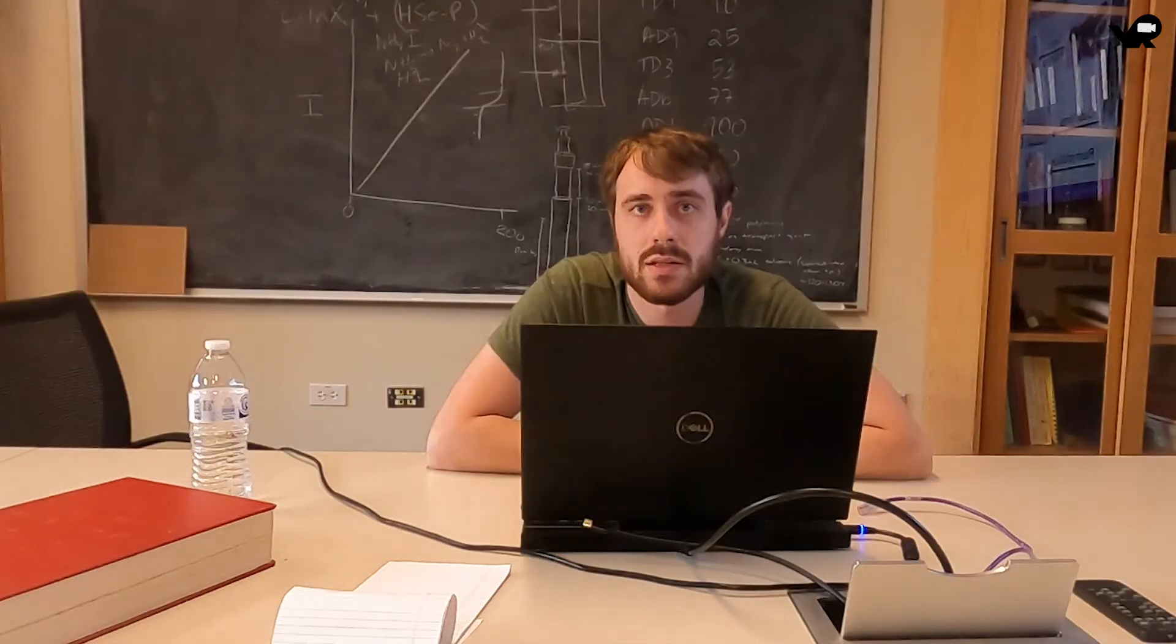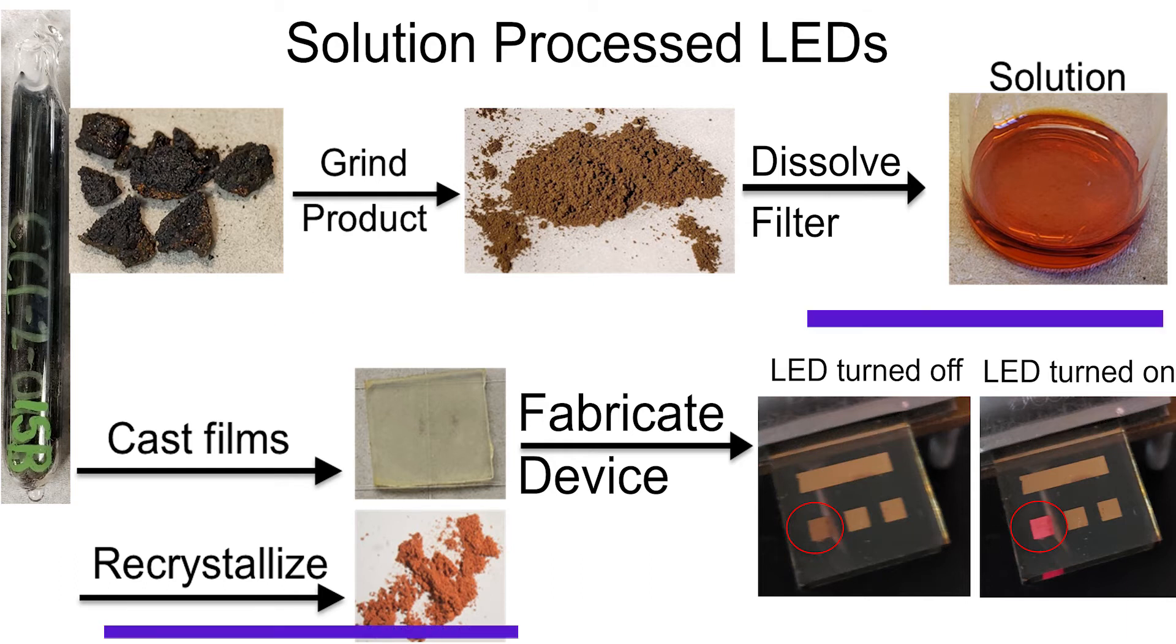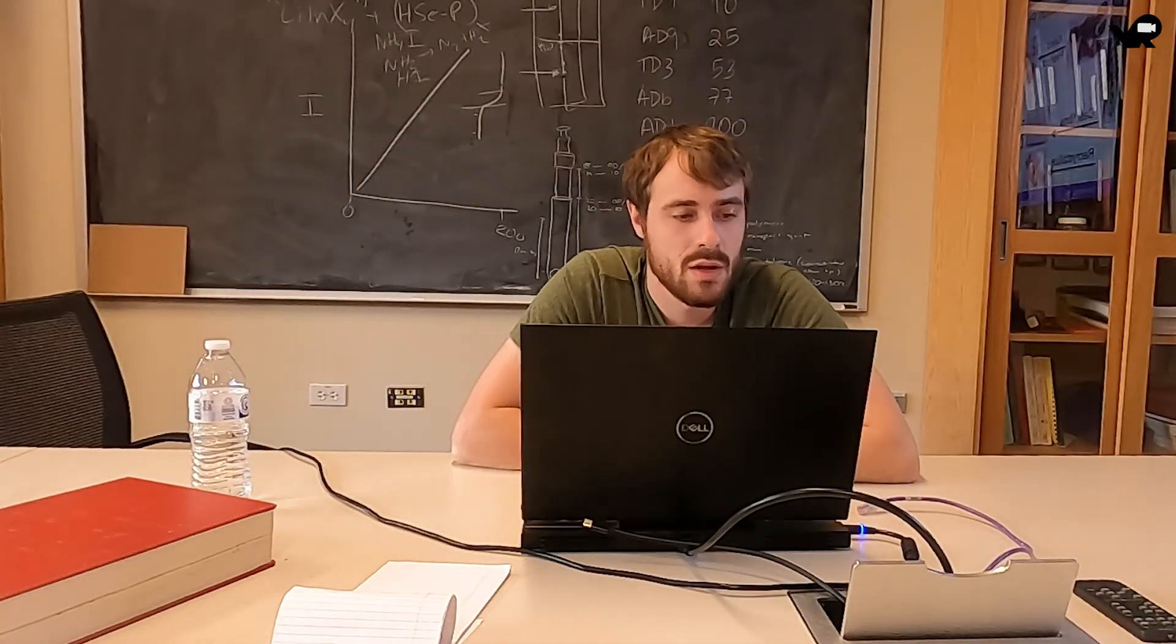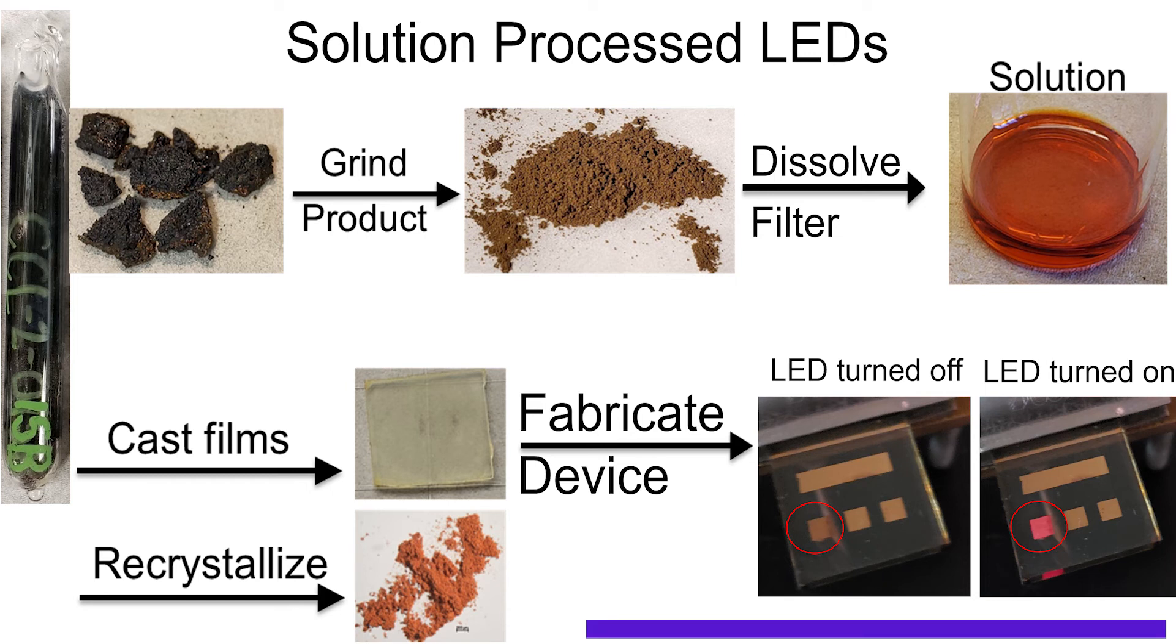The process for making these devices included then synthesizing the material, grinding it up into a powder, dissolving and filtering to get a nice orange solution, then casting films with that material, and then incorporating those films into a working device that when turned on shows this same reddish pink color.